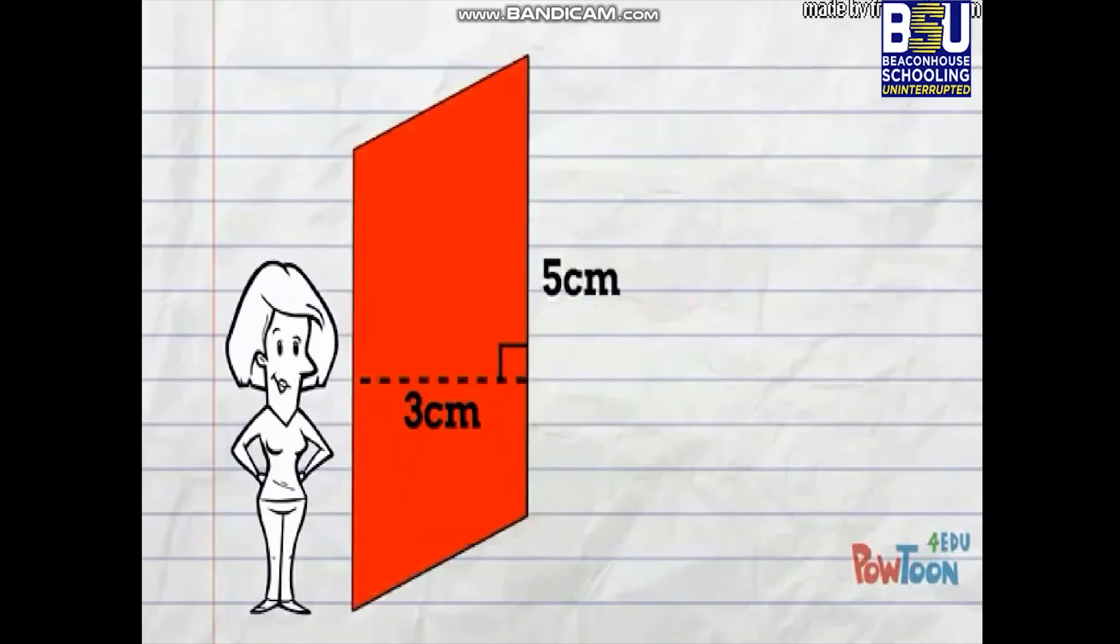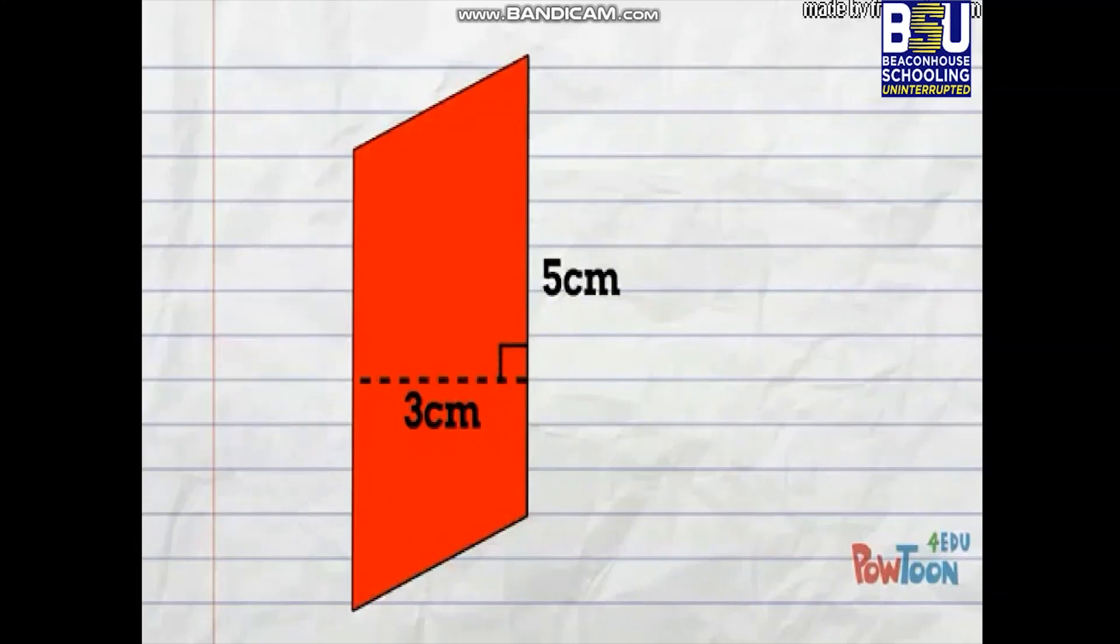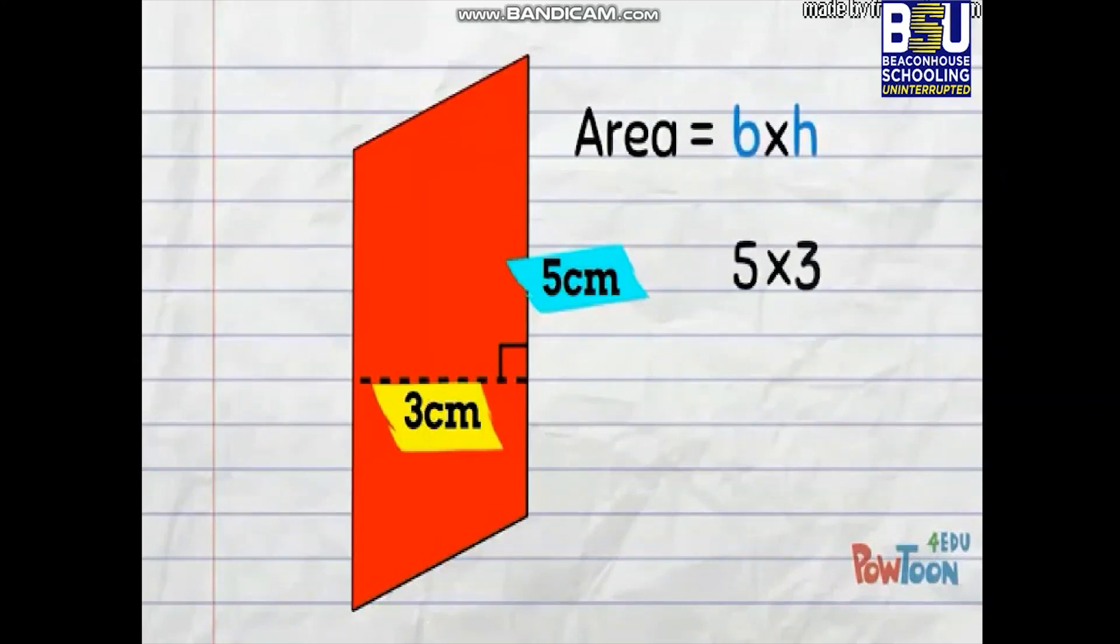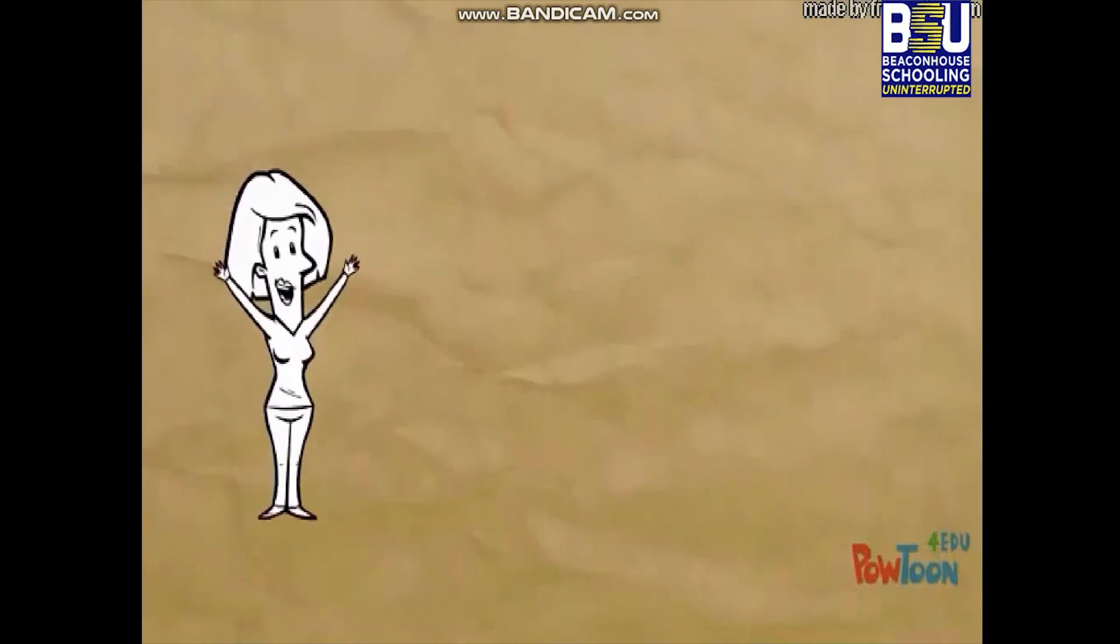Our base measures 5 centimeters and our height is 3 centimeters. Area is base times height, so 5 times 3 is 15 centimeters squared. Right now you're primed and ready.